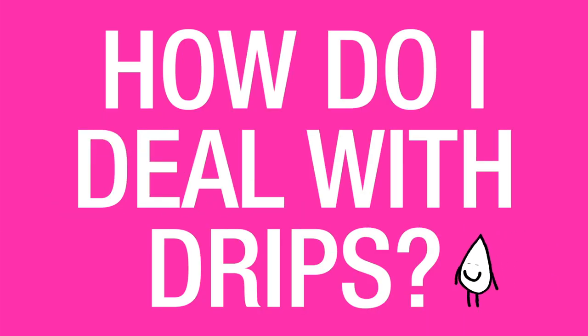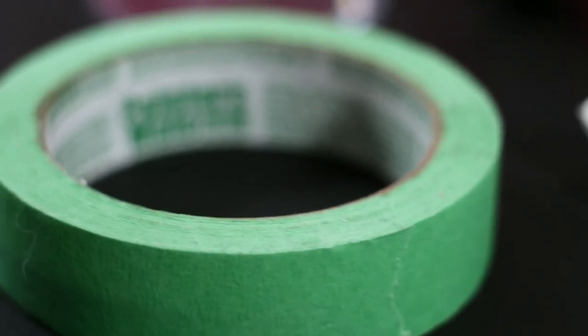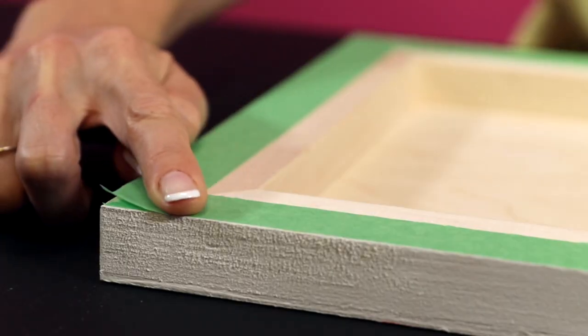How do I deal with drips? The best way to deal with drips is to prevent them from happening in the first place. To do this, you can take a piece of masking tape and run it along the underside of your piece to collect those drips as they're forming.